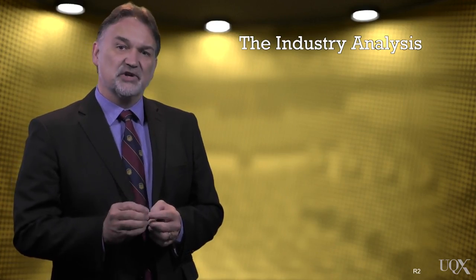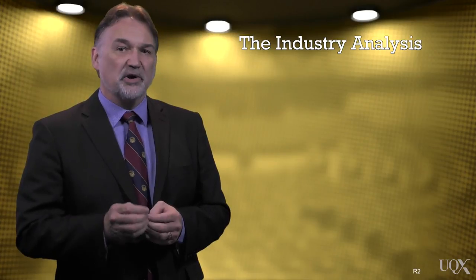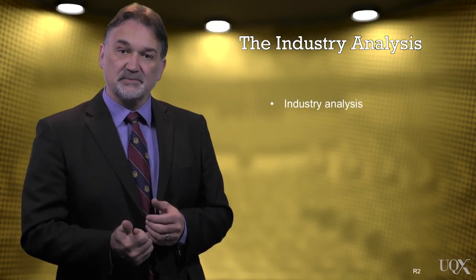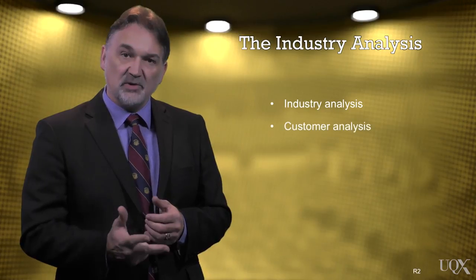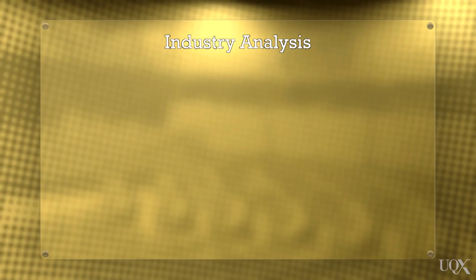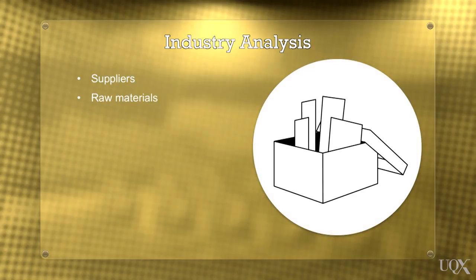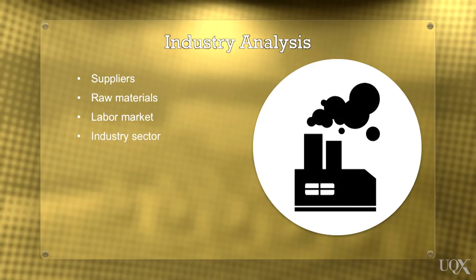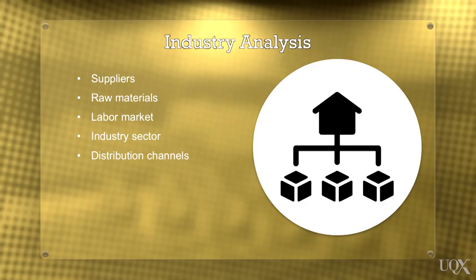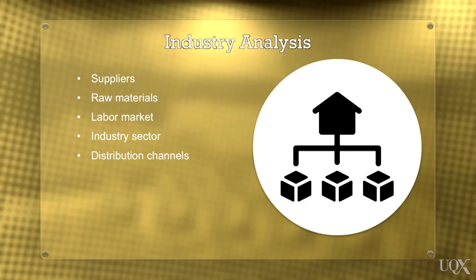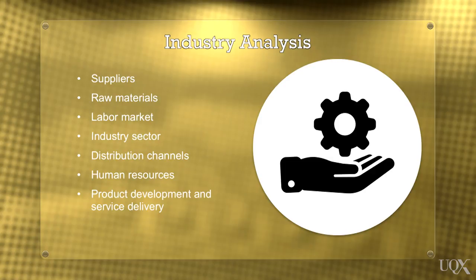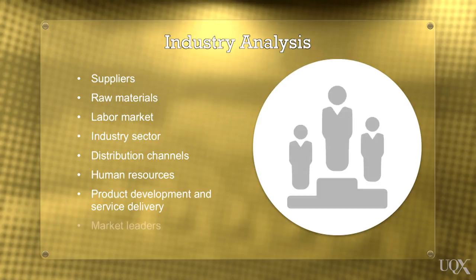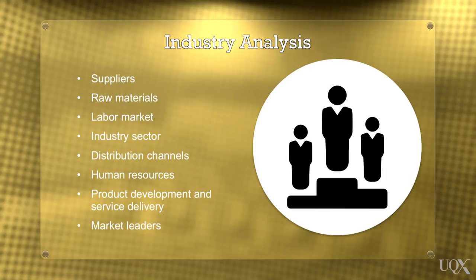Viljoen and Dan break down the industry analysis into three sections, each focusing upon understanding trends — industry analysis, customer analysis and competitor analysis. An industry analysis examines trends in the number and quality of suppliers, the ongoing availability of raw materials, the size of the specialised and general labour market and its educational level, the structure, size and growth of the industry sector itself, the number and quality of distribution channels, costs of raw materials and human resources, trends on product development and service delivery, and examining who are the market leaders and why they are successful.